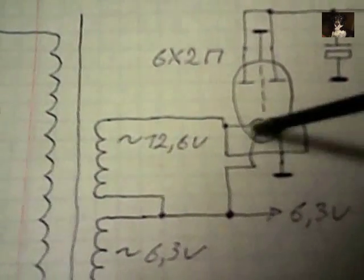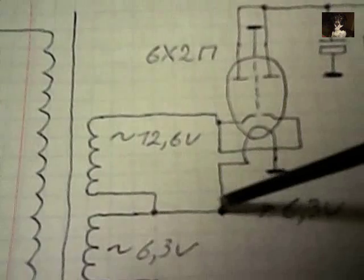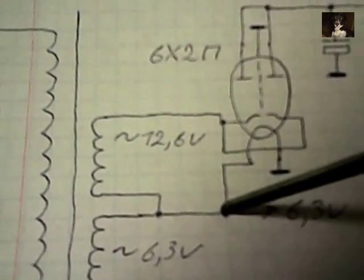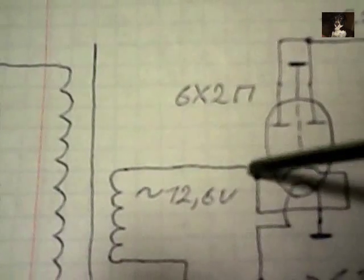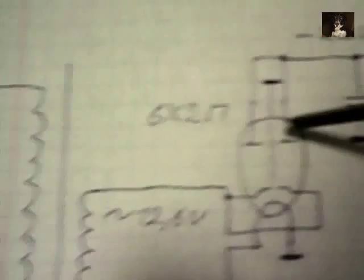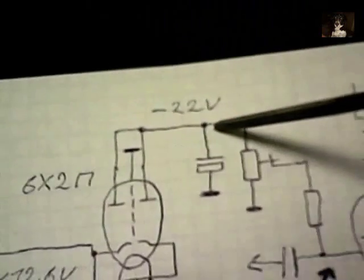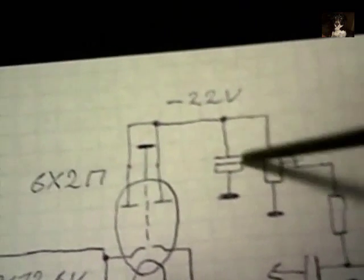Накал подключил к накальной обмотке, к 8 амперной параллельно остальным лампам. Из дополнительной обмотки подал напряжение на катоды. С анодов снимается отрицательное напряжение минус 22 вольта.